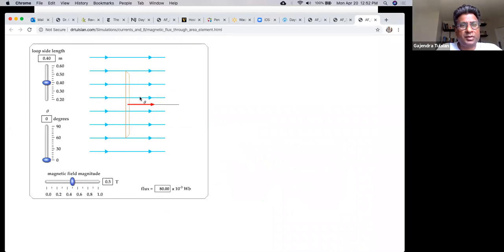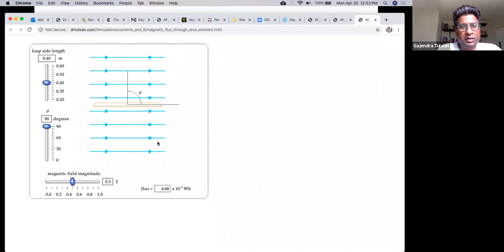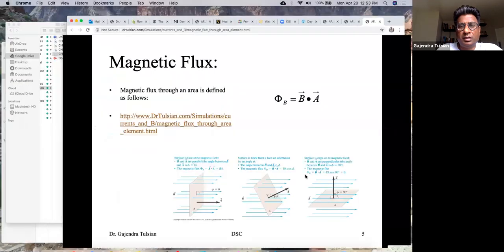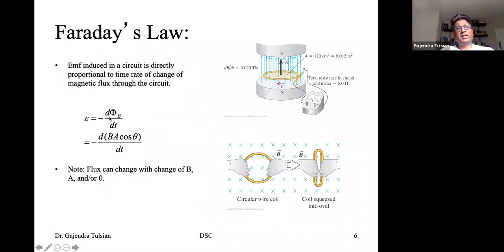In the simulation, here is the area vector and the blue lines are magnetic field lines. As we tilt the area vector, you see the flux is decreasing. When the area vector is perpendicular to the magnetic field lines, the flux through the area is zero. The flux is maximum when the area vector and the magnetic field lines are parallel to each other. Faraday's Law states that the EMF induced in a loop of wire is equal to minus the time rate of change of the magnetic flux threading that loop.